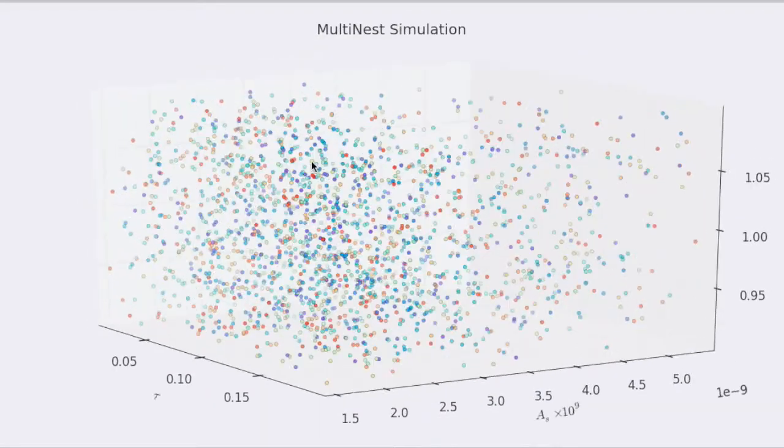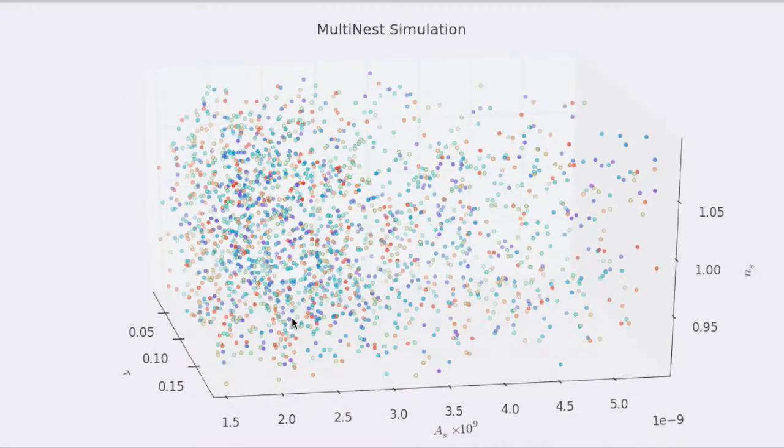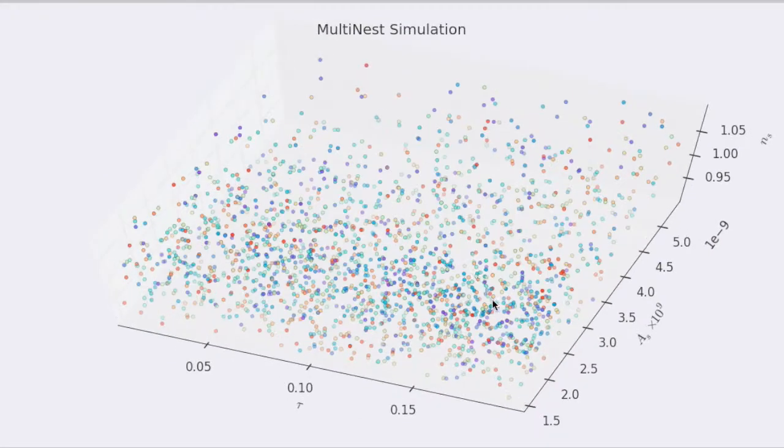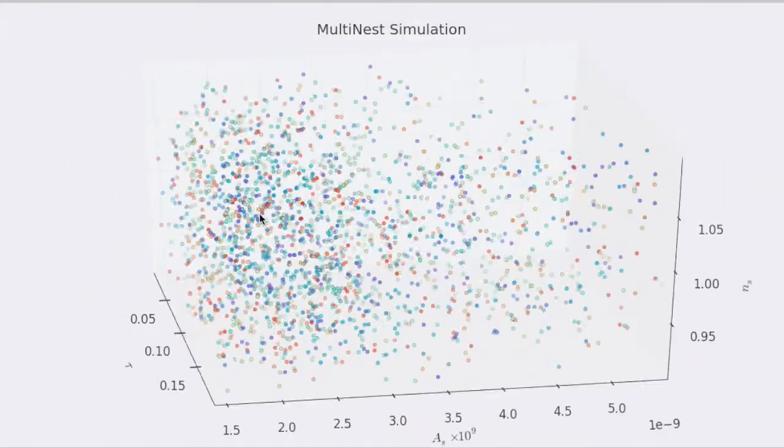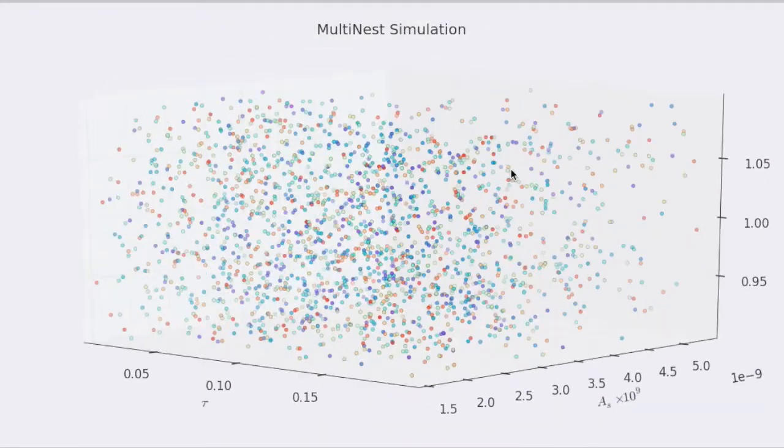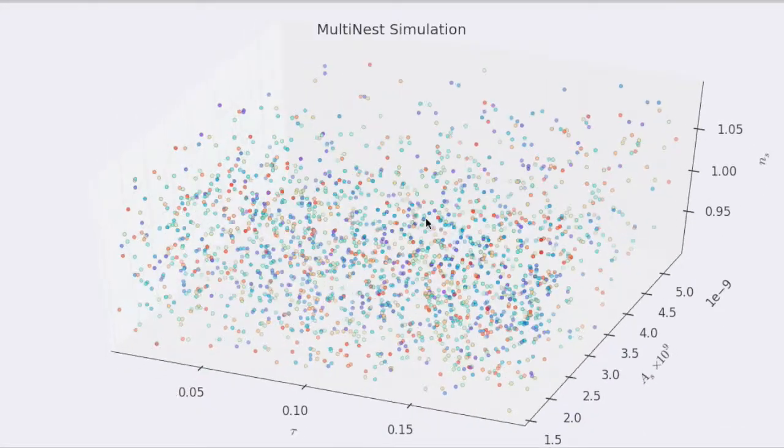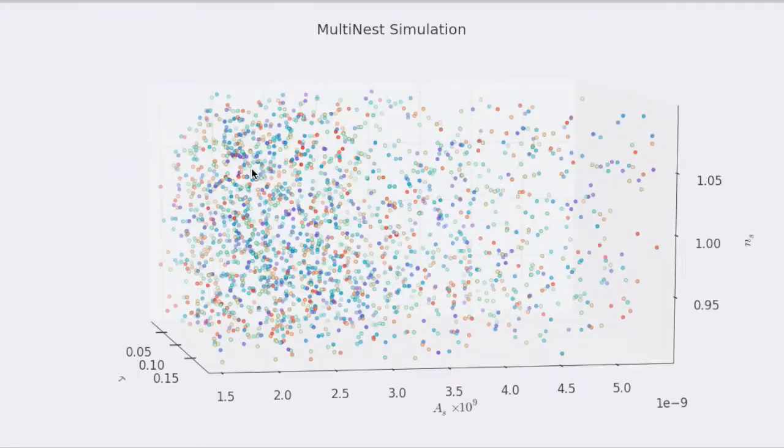Hey there. This is a visualization of how the Bayesian inference algorithm MultiNest evolves a set of live points towards areas of higher and higher likelihood within a given parameter space for a given model.